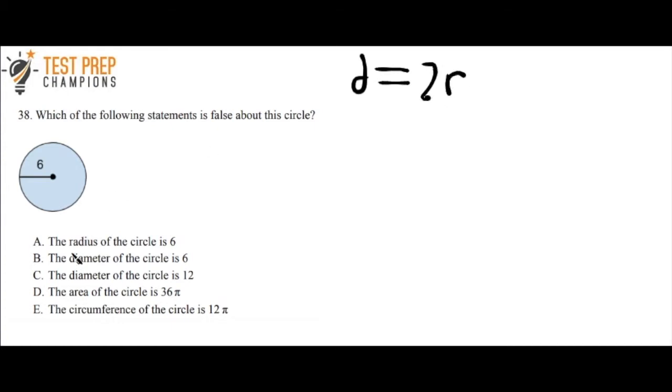We see here answer A: the radius of the circle is 6, and that is correct. So let me cross A off. The diameter of the circle can't be 6. We know the diameter equals twice the radius, so B is false. But let's check the other answers just to be safe.